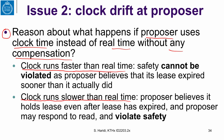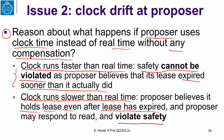If the clock runs faster than real time, safety cannot be violated, because the proposer then believes its lease has expired sooner than it actually did — for instance, it promised a 10-second lease but finished after nine seconds, which is fine. But if the clock runs slower than real time, the proposer believes it still holds the lease even after it has expired. This means the proposer may respond to a read immediately when it shouldn't, violating safety. Clearly, the proposer must ensure correctness even when the clock runs slower.